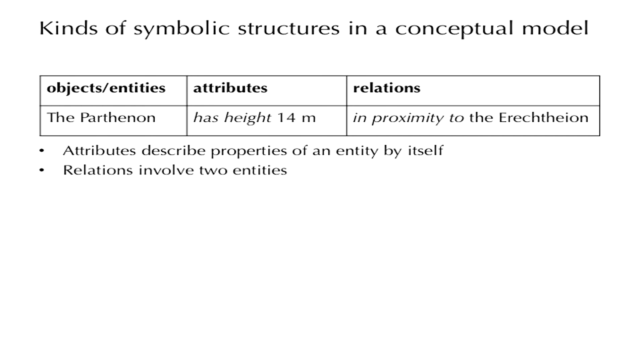Conceptual models are made up of symbolic structures of three different kinds. Objects or entities, attributes, and relations. Let's start with an example. The Parthenon is an object or entity. If we say the Parthenon has height 14 meters, then the statement that it has a height of 14 meters is an attribute. And if we say that the Parthenon is in proximity to the Erechtheion, then this is a relation between the Parthenon and the Erechtheion. So objects or entities are items that exist by themselves and we can talk about them in their own right, regardless of anything else that exists. Attributes are properties that these objects have, and describe those objects. And relations presume the existence of two particular objects that are related in some specific way. By naming the relation, we actually express the specific way in which these objects or entities are related.